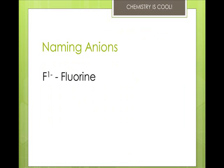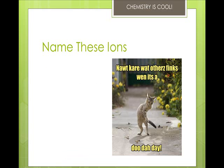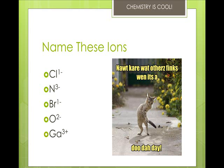When we have anions, these are always the same because you just change the element ending to '-ide'. So F1− is not the fluorine ion — it's the fluoride ion. The chloride ion, nitride ion, bromide ion, and oxide ion all follow this pattern. And if it's a plus charge, you use the name of the metal, so it's the gallium ion.